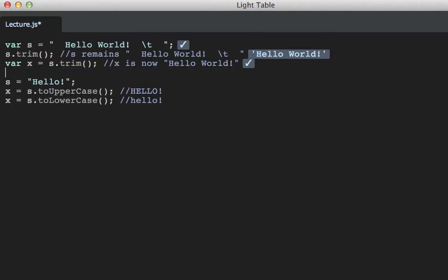s is unchanged still. Let's reset our variable to be simply hello with an exclamation point. If we capture the result of the toUpperCase method, then that results in hello uppercase. The exclamation point is not an alphabetic character, so it's unaffected. toLowerCase does the same thing, but now the h is lowercase. s again is unchanged.